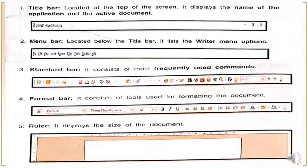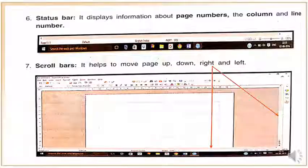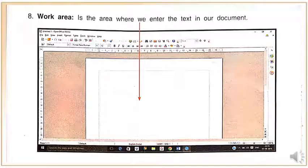The fourth is the format bar, which consists of tools used for formatting documents. The fifth is the ruler, which displays the size of the document. The sixth is the status bar, which displays information about the page number, columns, and line numbers. The seventh is the scroll bar, which helps to move the page up, down, left, and right.